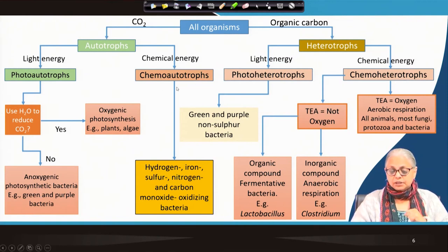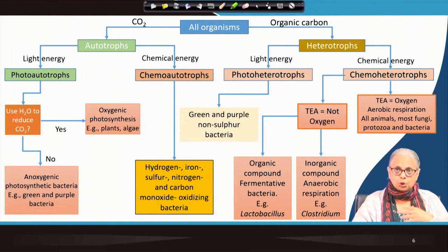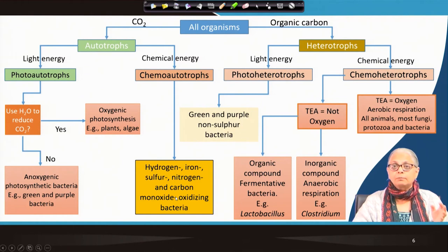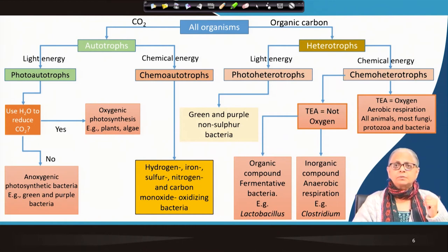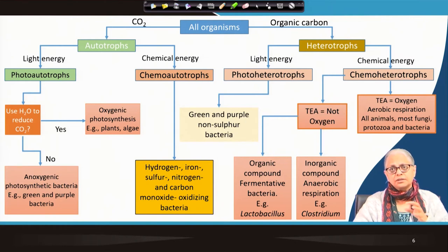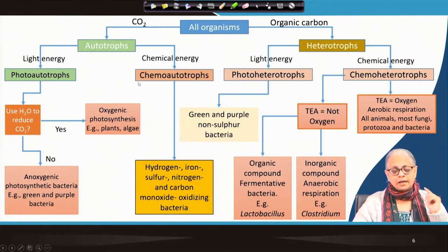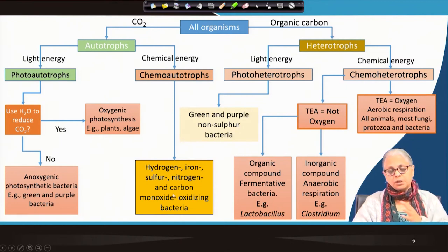Chemoautotrophs — also called lithotrophs — utilize several inorganic compounds: hydrogen, iron, sulfur, nitrogen, and carbon monoxide oxidizing bacteria are all examples. A well-known example from environmental engineering is nitrifying bacteria in wastewater treatment, which convert ammonia to nitrite and nitrate. These are autotrophic bacteria that use oxygen in the process.